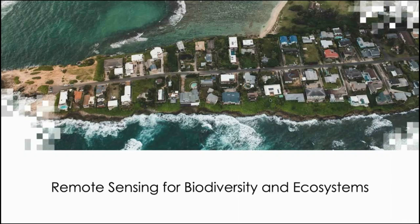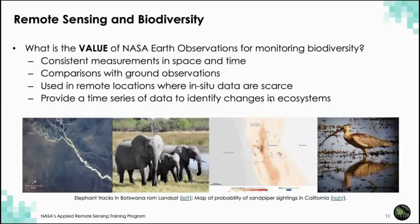Let's start off with an overview of remote sensing for biodiversity and ecosystems. Remote sensing — taking images or other measurements of Earth from above — provides a unique perspective on what is happening on Earth and plays a special role in biodiversity and conservation applications. Consistent measurements in space and time provide the information necessary to study changes and trends in ecosystems. Remote sensing data are often paired with ground observations for a more holistic picture of ecosystems and species dynamics.